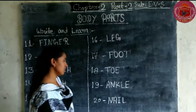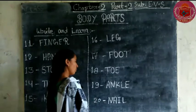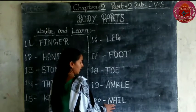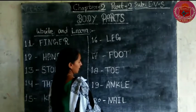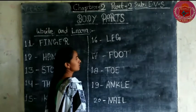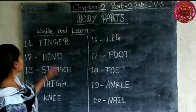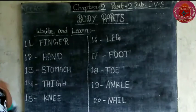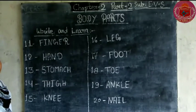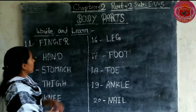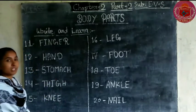The last is nail. Nail means nakho. N-A-I-L. Nail means nakho. Students, write these down and learn them.